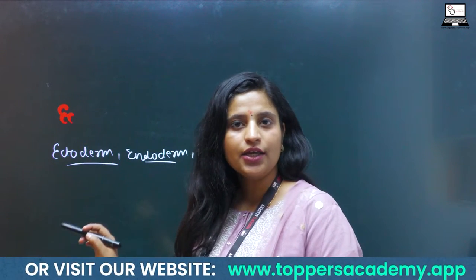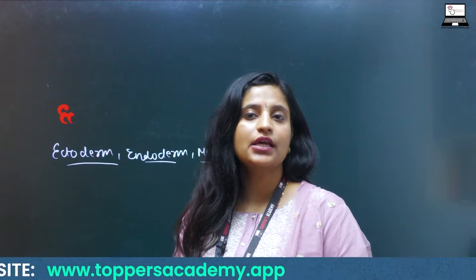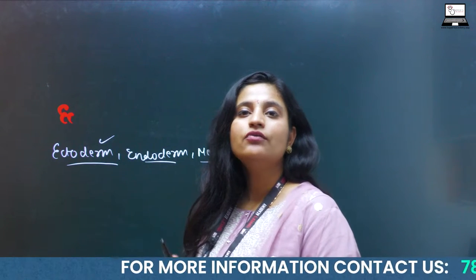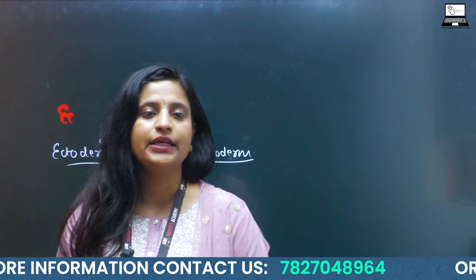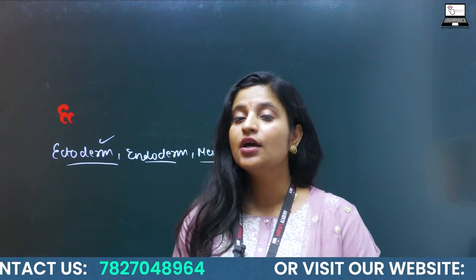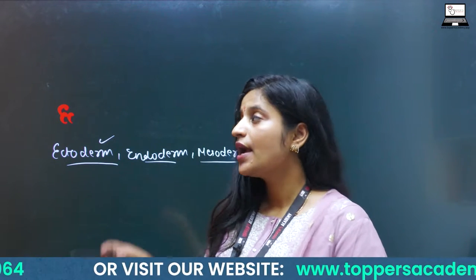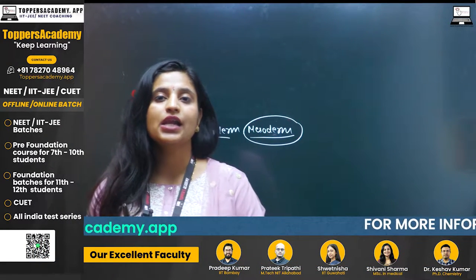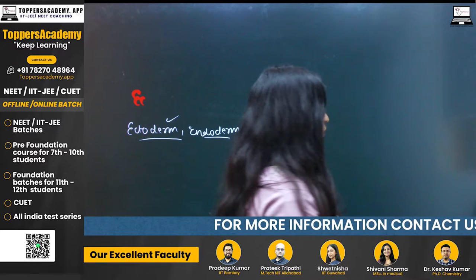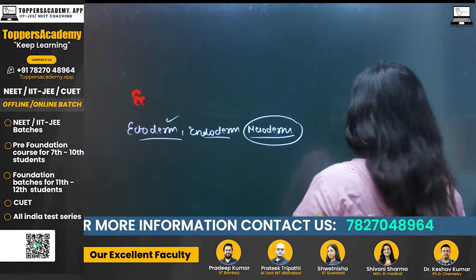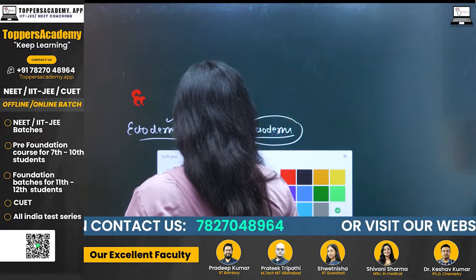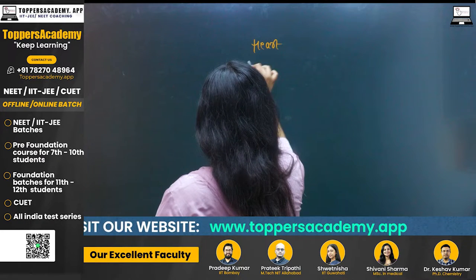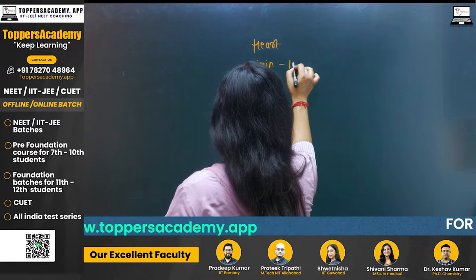From the ectoderm germ layer, your body cells, body hair, and your skin — the entire covering of your body — they form. Endoderm forms the GIT system of your body: pancreas, intestine (both small and large), liver, and pancreas etc. The mesoderm germ layer forms your visceral organs like heart, lungs, and kidney, and also your muscle cells. So the heart is originated from the germ layer of mesoderm.